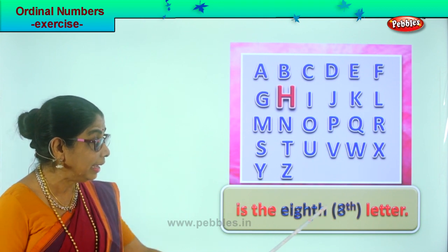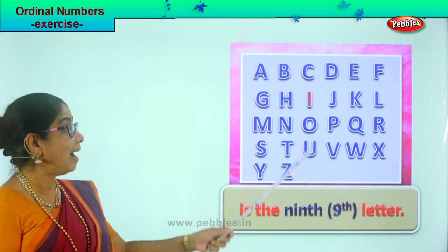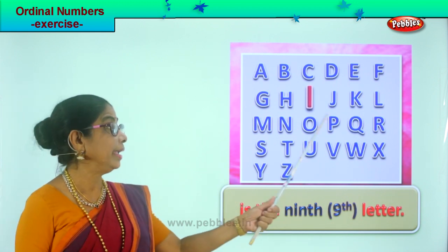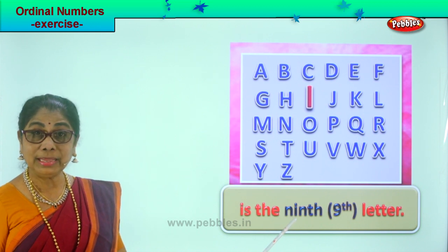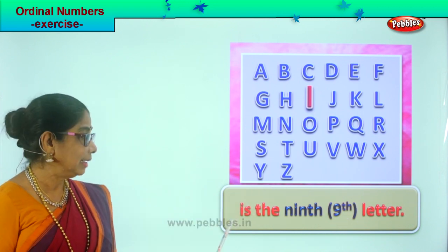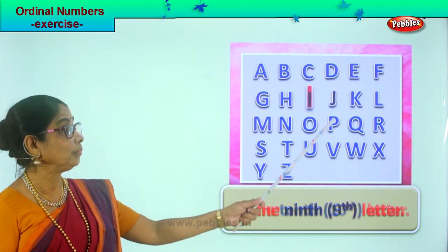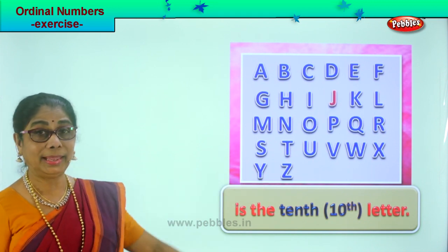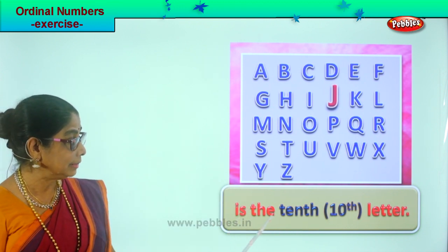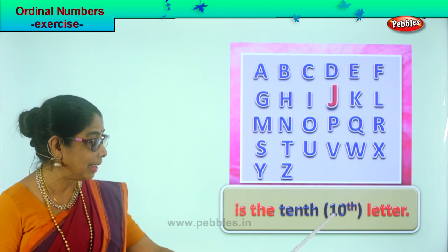Look at the spelling of ordinal number eighth — the representation is eight and TH. H is the eighth letter. Next, I — I is the ninth letter. Look at the spelling: N-I-N-T-H, ninth. The representation is nine and TH. Next, J — J is the tenth letter. You write number ten and TH.